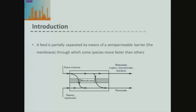With a membrane, what we have is a semi-permeable barrier. We put in our feed, and part of our feed actually passes through our membrane and comes out as what we call the permeate. Some of our feed material doesn't pass through our membrane, and that comes out of our membrane section as a material called the retentate.